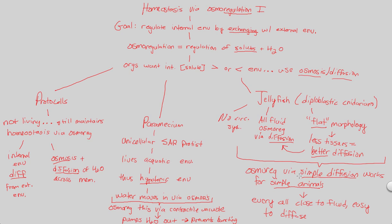What we'll directly contrast this with in the next flowchart is homeostasis via osmoregulation part two — looking at more complex organisms like plants and humans.